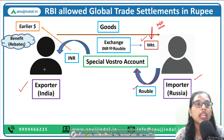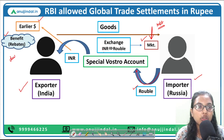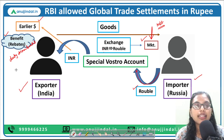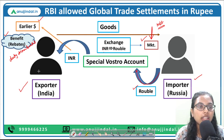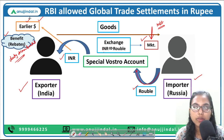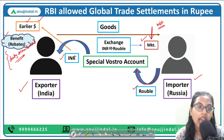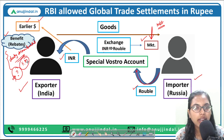The ruble is converted into INR and used to pay the Indian exporters. Earlier, exporters were paid in dollars and received certain benefits including duty drawbacks, rebates, export promotion capital goods incentives, and rebates on duties and taxes from government schemes. The question now is whether these benefits will still be available to exporters when they receive payment in INR rather than in dollars or freely convertible currencies. The foreign ministry will need to provide clarity on this.